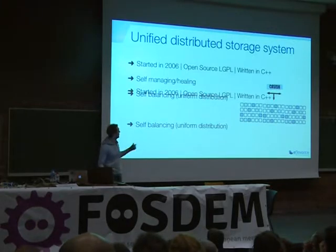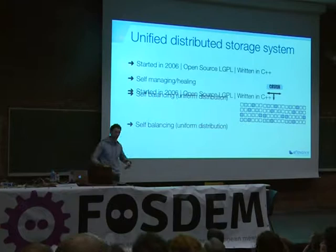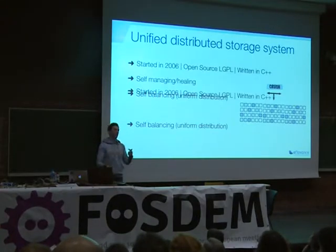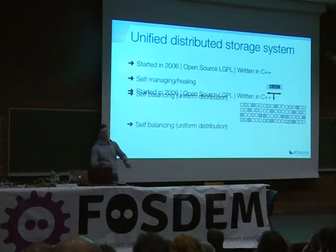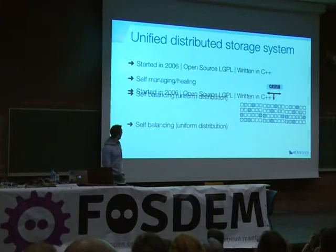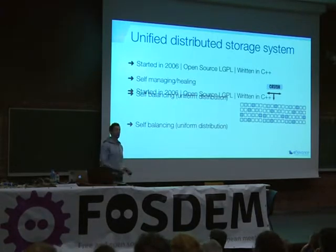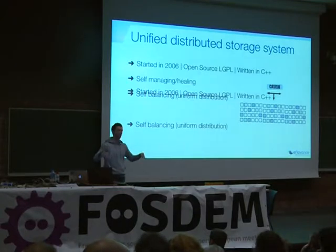It's self-healing as well, because as soon as something goes wrong, we just replicate all the objects — we calculate the location of the object and then move them around. It's also self-balancing, because we tend to have a uniform distribution of the data. As soon as we add a new node or a new disk, everything gets spread around the entire cluster. So that's quite efficient.